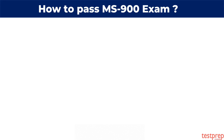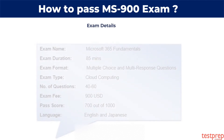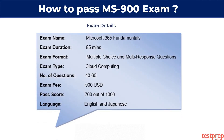If there is something you can't miss, then it's surely the exam details. The MS-900 exam comprises 46 to 60 multiple choice and multi-response questions. You have to score 700 or more points in a time period of 85 minutes. The exam costs $165 USD with additional taxes. Above all, the exam is available in English and Japanese.